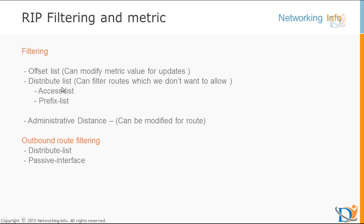The second filtering method is distribute list. Distribute list generally filters routes — which routes we want to allow into our routing database and which routes we don't want to advertise to our neighbor. We can filter when the update comes in and when the update goes out of the interface, so per interface per direction we can configure this. Distribute list uses two types of methods: ACL and prefix list.